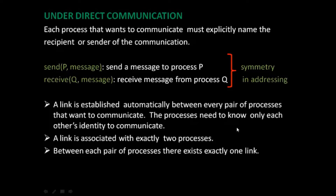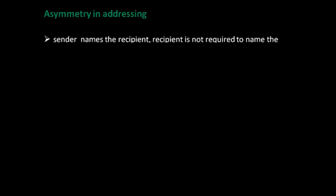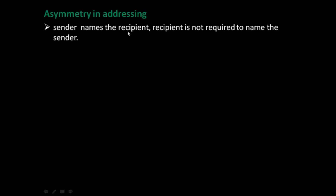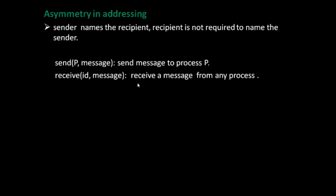There is another variant of this scheme which employs asymmetry in addressing. In this case, the sender has to specify the name of the receiver, but the receiver is not required to specify the name of the sender. The primitives are defined as: send(P, message) — send a message to process P — and receive(id, message) — receive a message from any process.